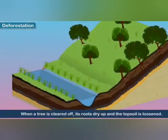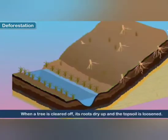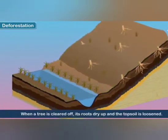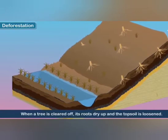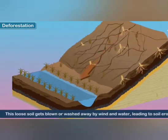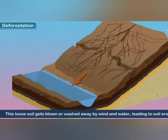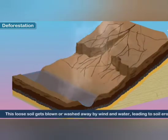When a tree is cleared, its roots dry up and the topsoil is loosened. The loose soil gets blown away by wind or washed away by water, leading to soil erosion.